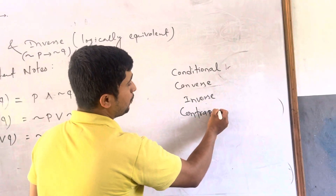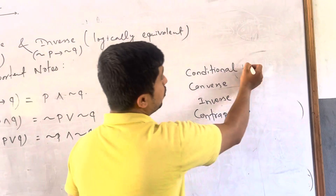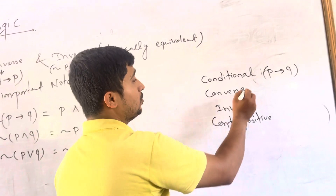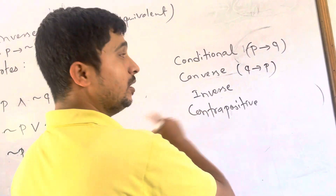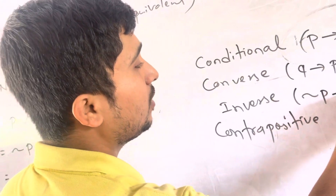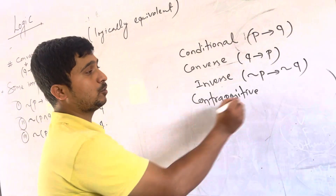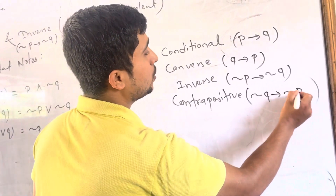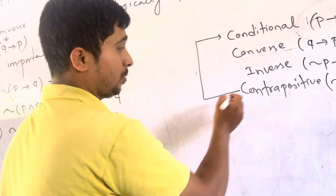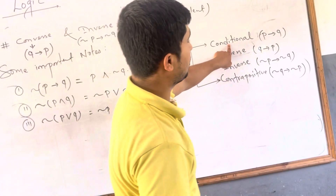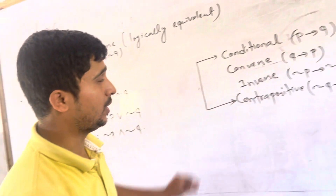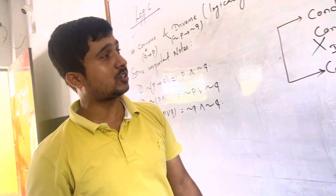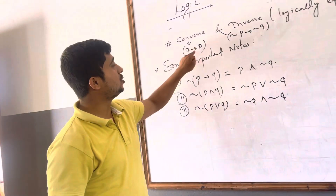From this truth table you will have these conclusions: Contrapositive and conditional are logically equivalent. Converse and inverse are logically equivalent. These are the key relationships you need to remember from this chapter.